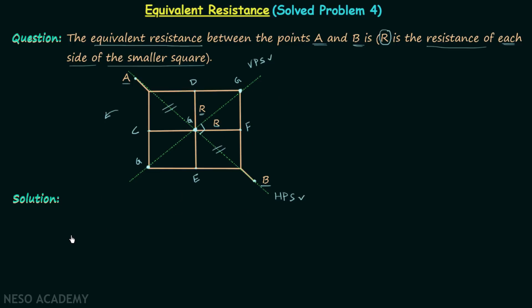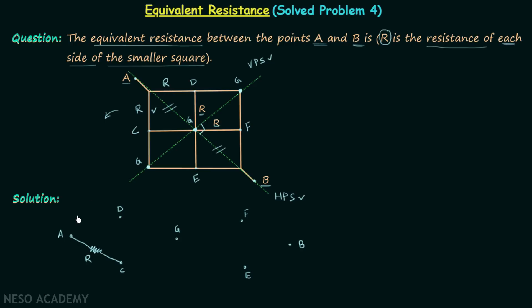Now we reconstruct our network. We have point A, then point D, then point C, point G, point F, point E, and finally point B. Between A and C we have an R resistance, so we place one resistor of value R. Between A and D we also have R resistance, so we place another resistor of value R.